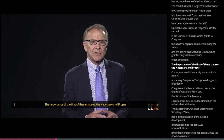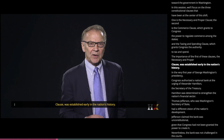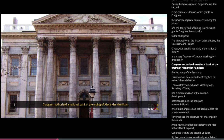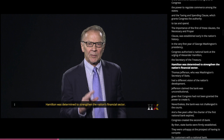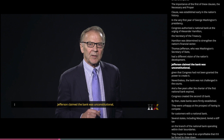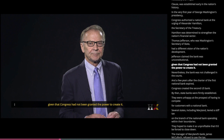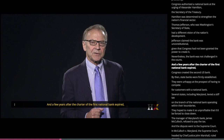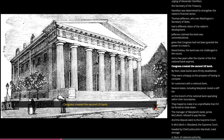The importance of the Necessary and Proper Clause was established early in the nation's history. In the very first year of George Washington's presidency, Congress authorized a national bank at the urging of Alexander Hamilton, the Secretary of the Treasury, who was determined to strengthen the nation's financial sector. Thomas Jefferson, Washington's Secretary of State, claimed the bank was unconstitutional, given that Congress had not been granted the power to create it. Nevertheless, the bank was not challenged in the courts. A few years after the charter of the first national bank expired, Congress created the second US Bank.